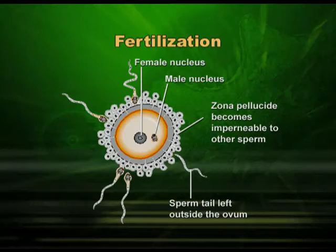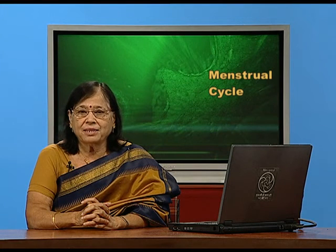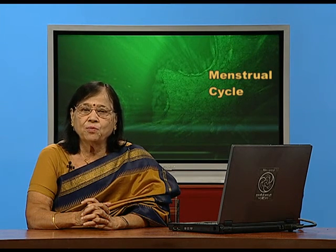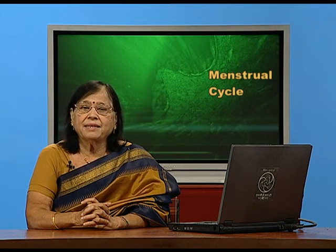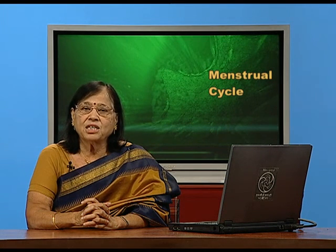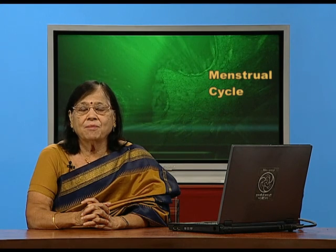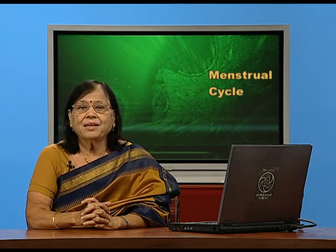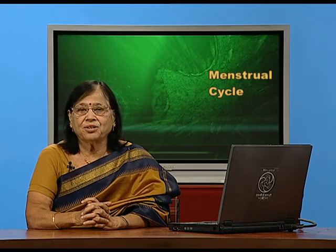The zygote finally reaches the uterus where it will be implanted. The value of the menstrual cycle is that it enables production of an ovum which can be fertilized and a new baby formed — this is one way for the continuation of the species. Hence, the menstrual cycle in primates is an indication of fertility. With this, I come to the end of this session — thank you.